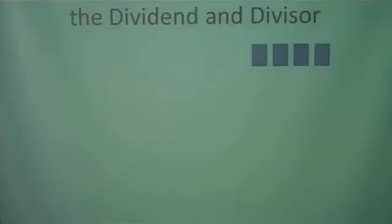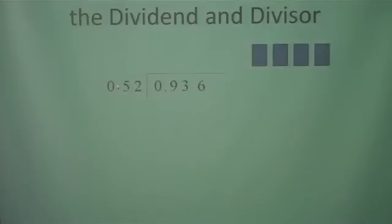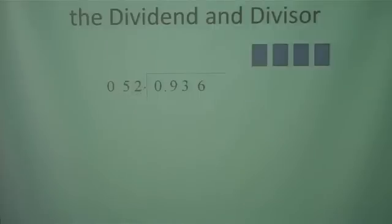The last one is a division problem where there's a decimal in both the dividend and the divisor. The problem is 93.6 divided by 0.52. We cannot have a decimal in the divisor, so we have to get rid of it. We swing it to the right to the very end of the number so we can drop it, and whatever we do to the outside, we have to do to the inside. We swing the decimal two times and now we can drop it. We also swing the dividend's decimal over twice, and now we pop it straight up into our answer and we're ready to begin.